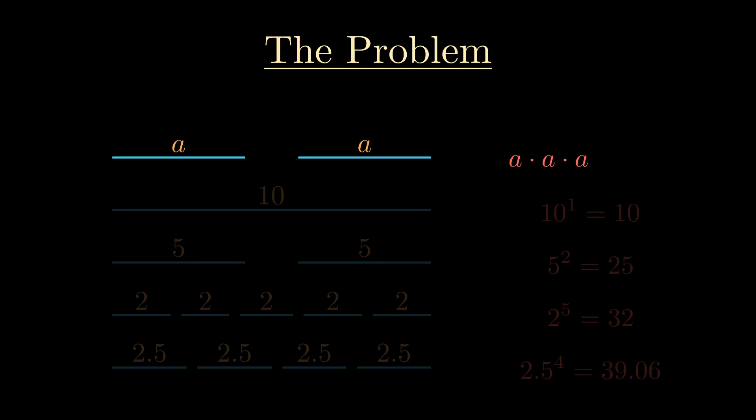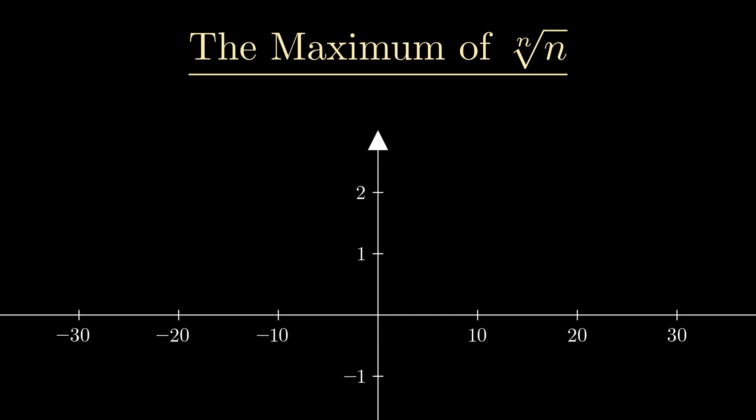For what value a do we get the greatest value when we multiply the numbers together? To answer this question, we're gonna answer a seemingly completely unrelated question first: for what input do we get the greatest output for y equals the nth root of n?